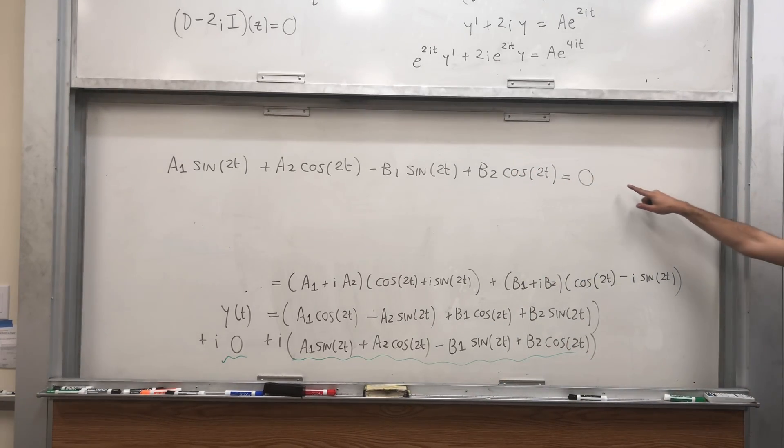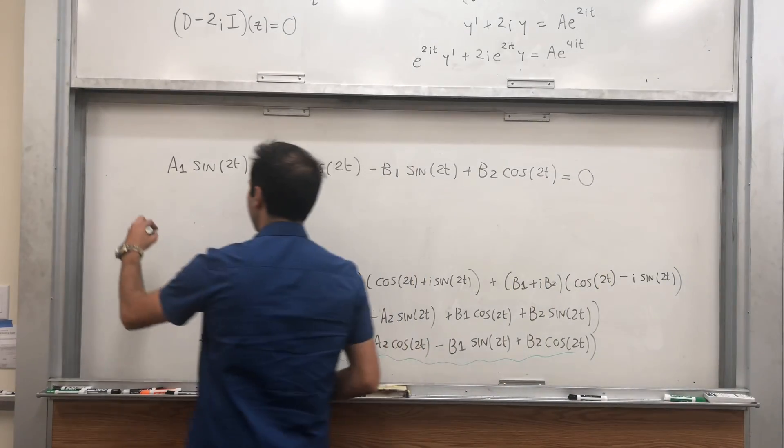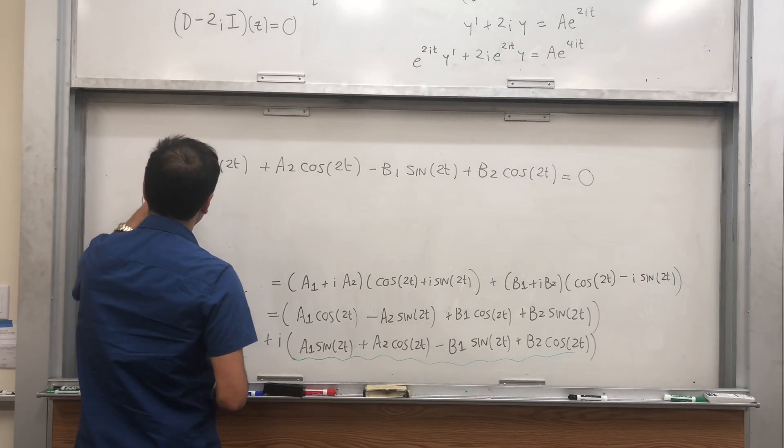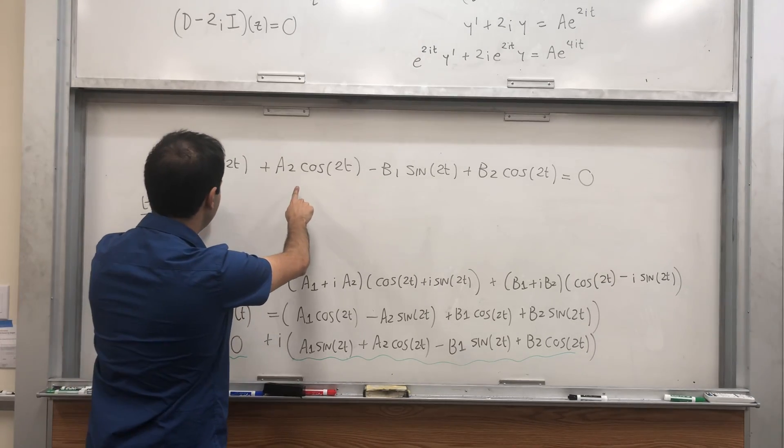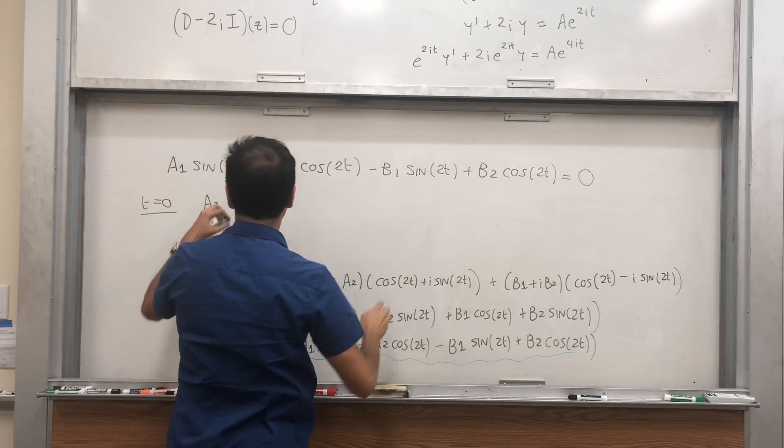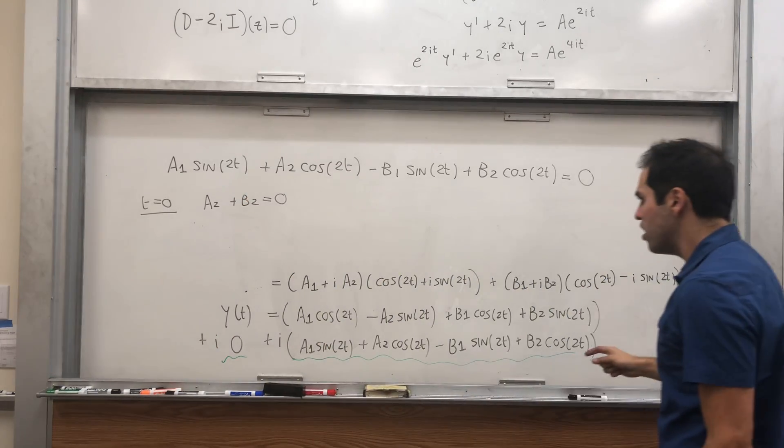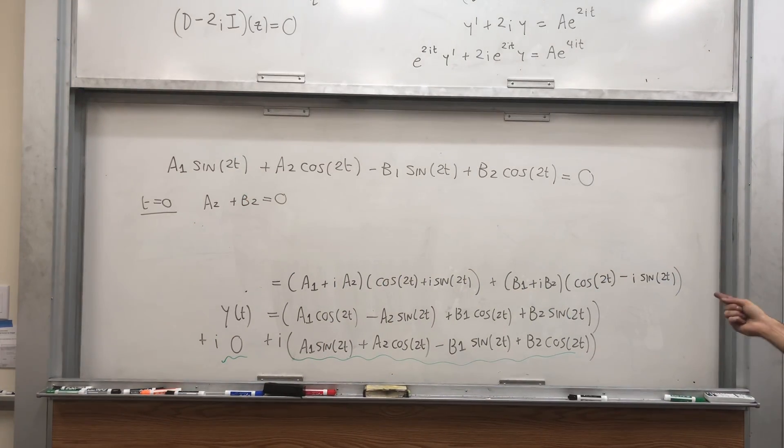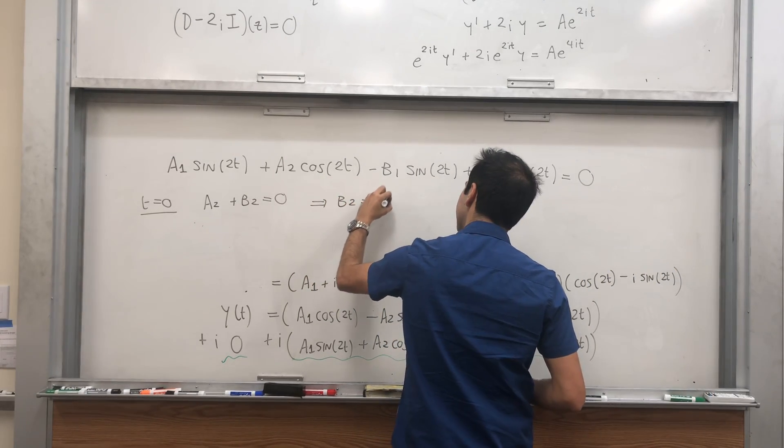And the important thing is we get that this function equals 0 at every value. In particular, if you plug in t equals 0, you get a1 times 0, which is 0, plus a2 times 1, so which is a2, minus 0 plus b2 equals 0. So a2 plus b2 is 0, so b2 is minus a2.